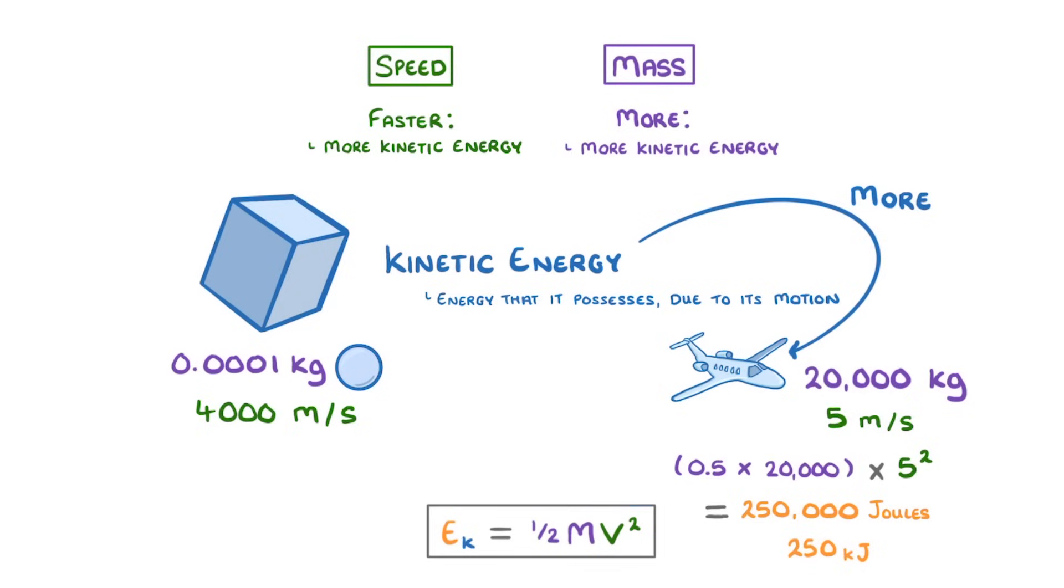Meanwhile for the particle, we do 0.5, times 0.0001, times 4,000 squared, which gives us 800 joules, or 0.8 kilojoules.